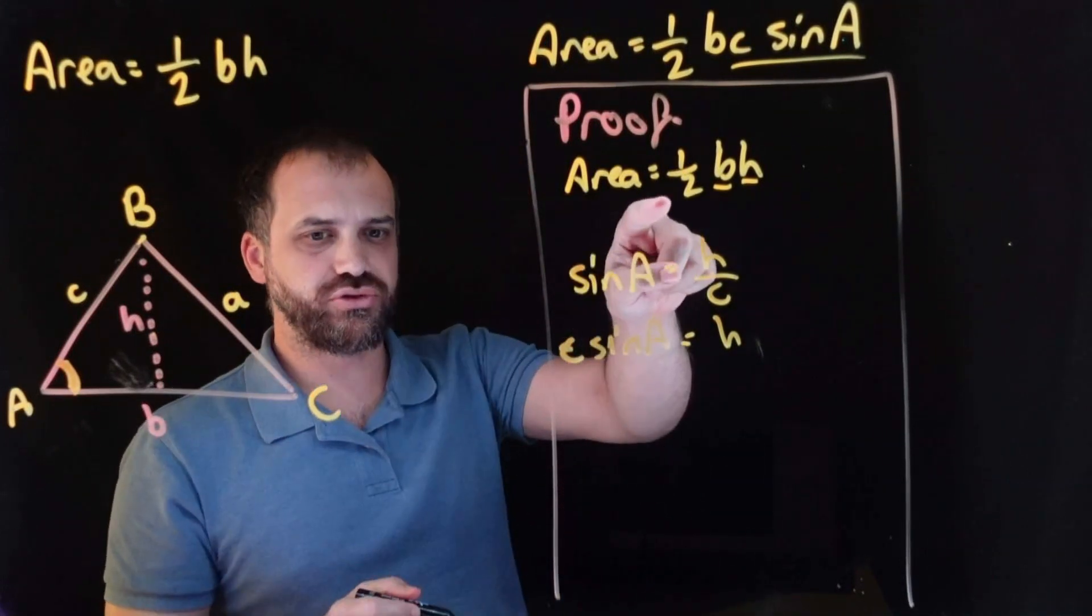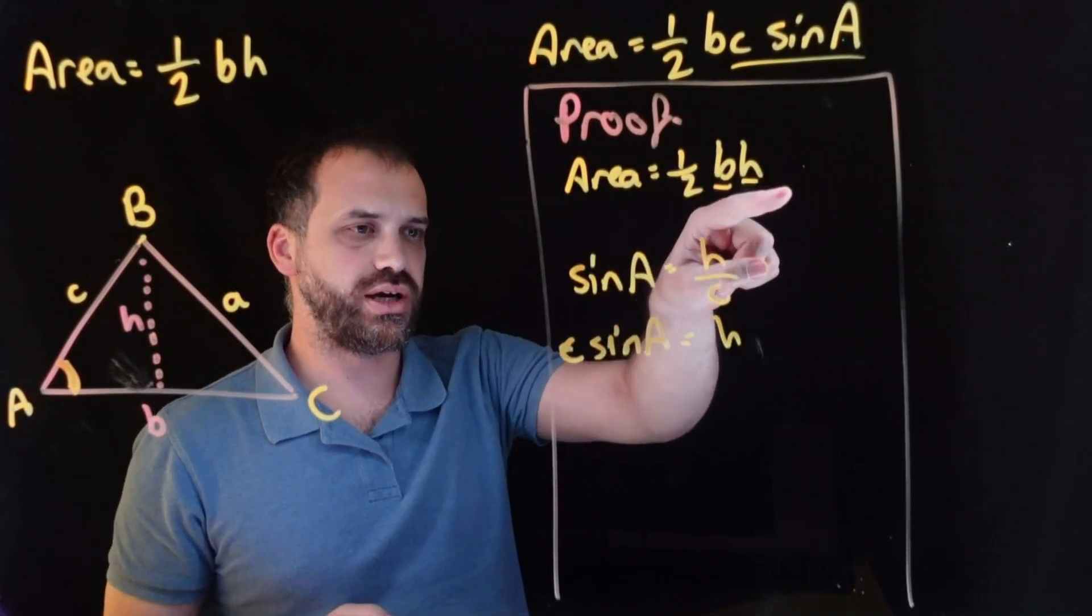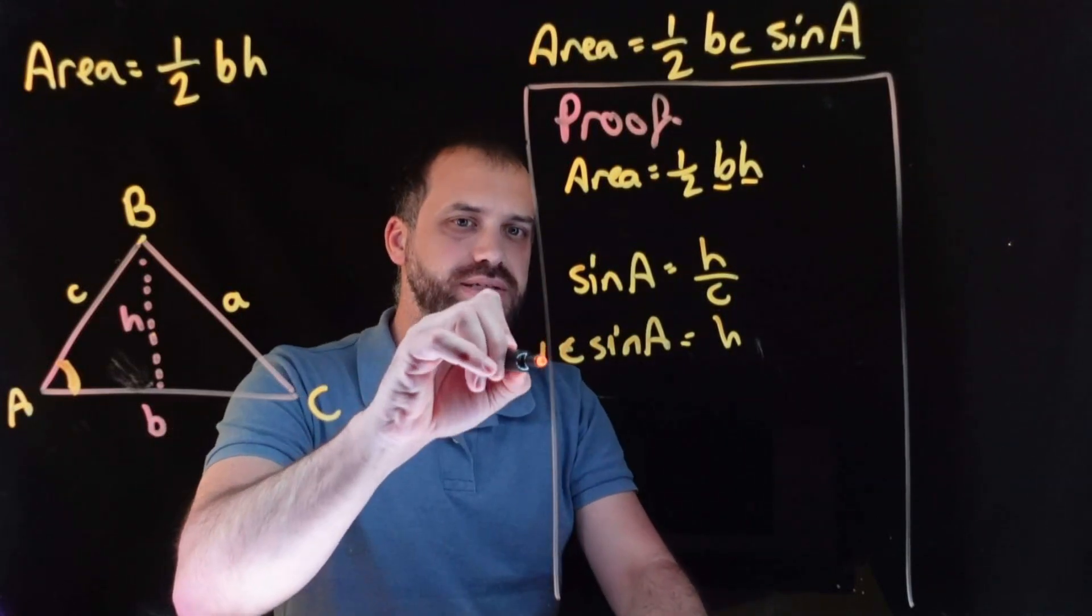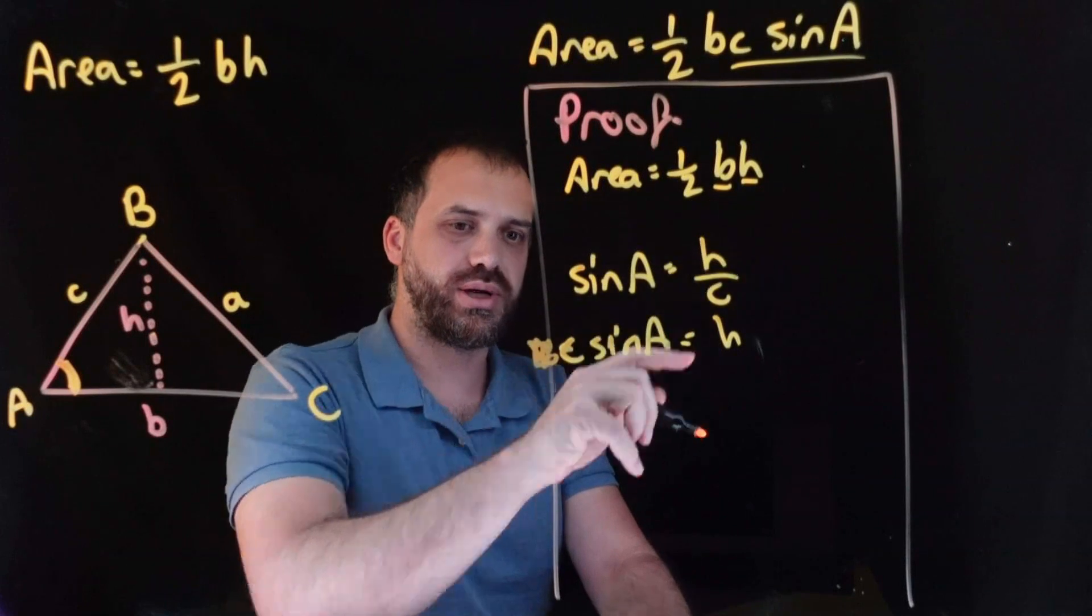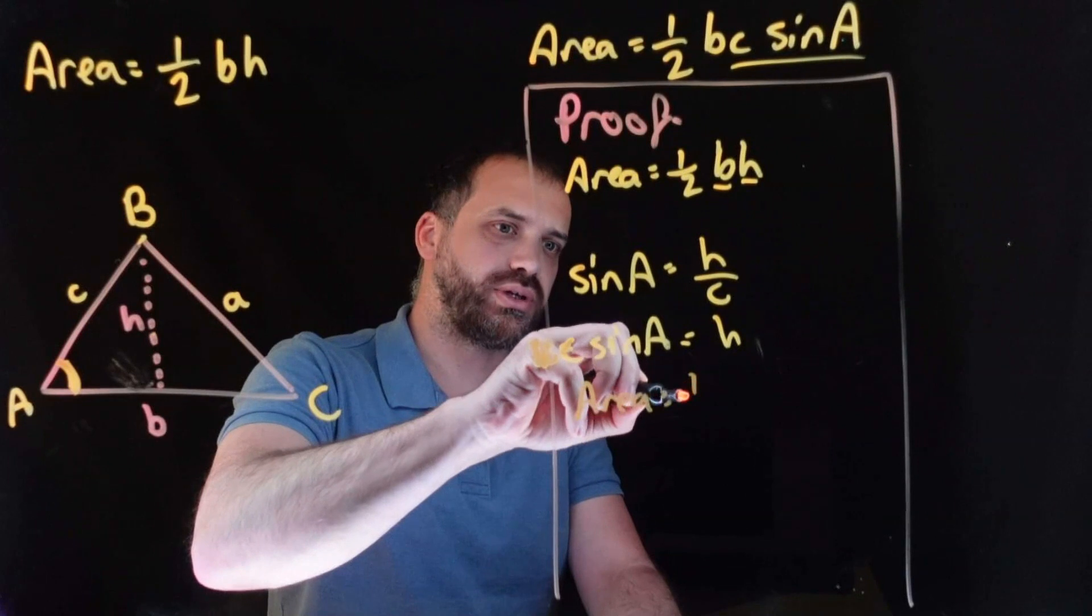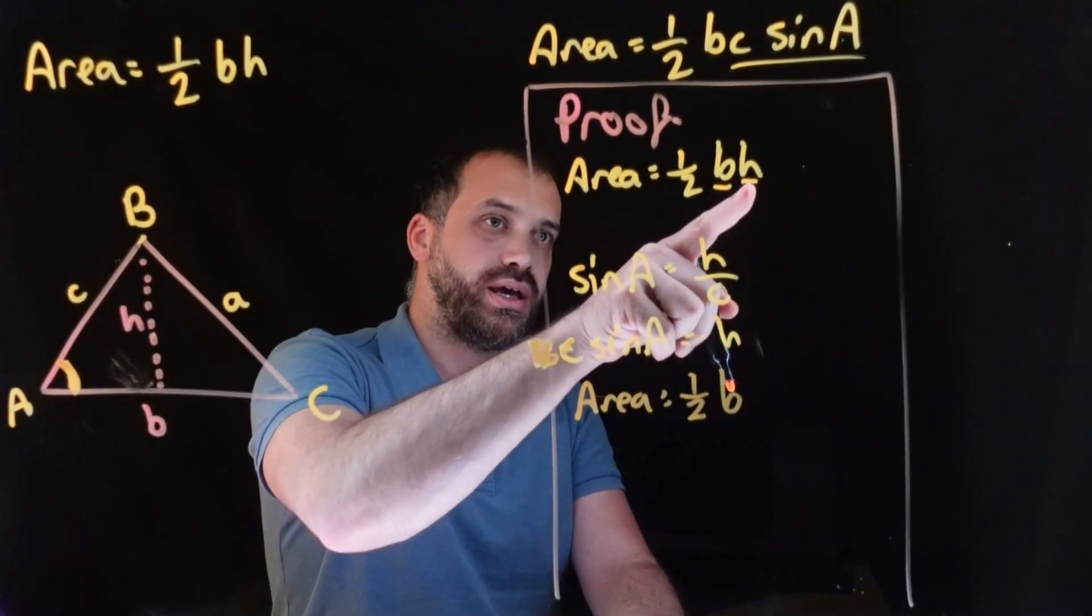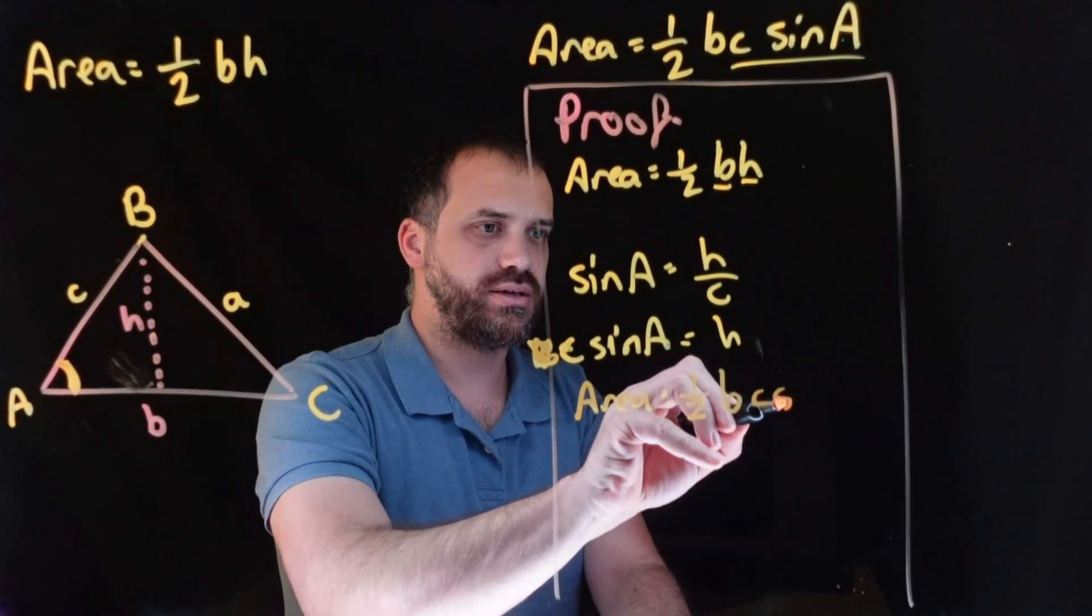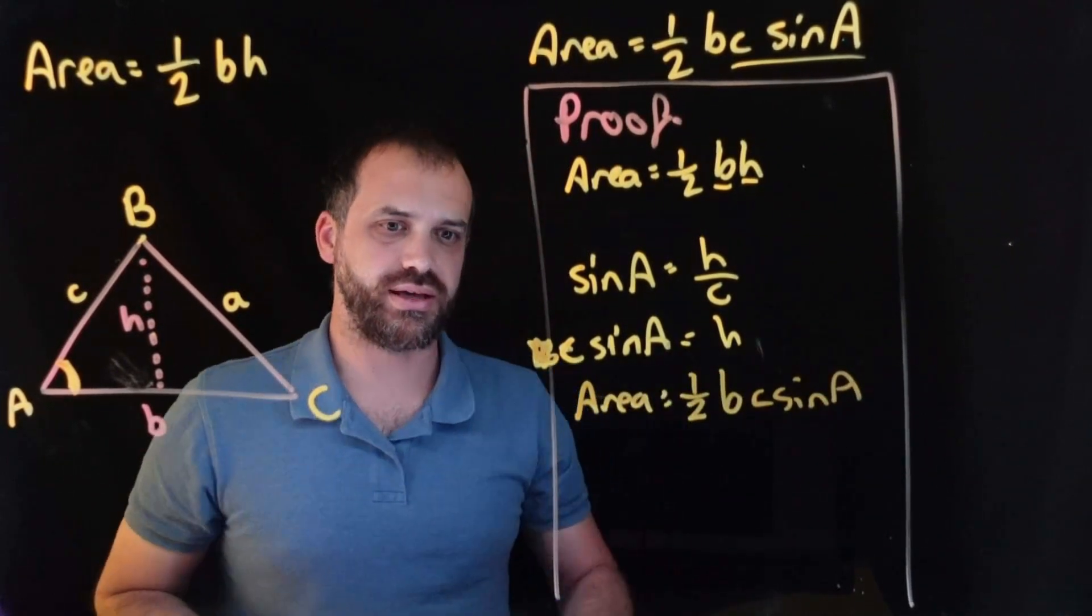Alright, so if the area of a triangle is equal to half of base times height, and height is equal to C sine A, we can sub this into our original area of a triangle formula and say that the area of a triangle is equal to half of B, and what used to be H, we can now sub in C sine A.